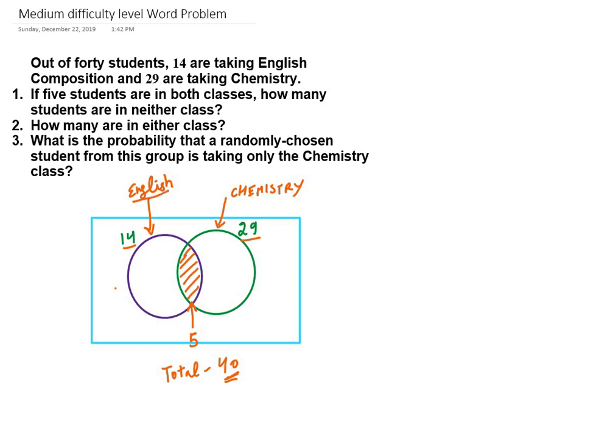are taking English and 29 are taking Chemistry. If 5 students are in both classes, how many students are in neither class? They have mentioned that 5 students are in both classes, which means the two circles will intersect.